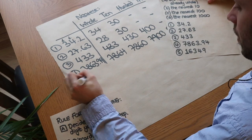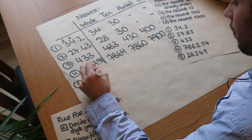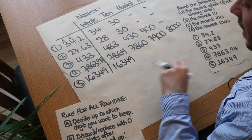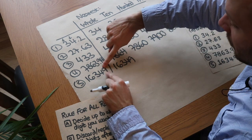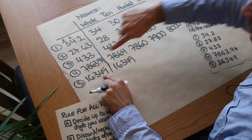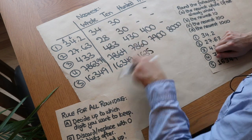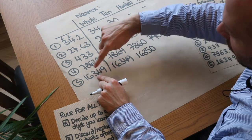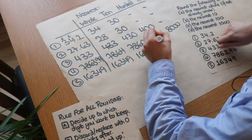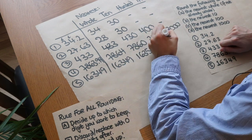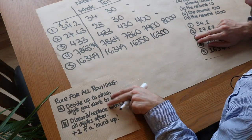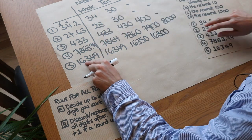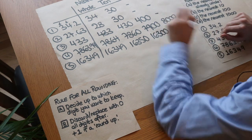Final example - try this yourself: 16,349. To the nearest whole, it's already whole: 16,349. To the nearest ten: keep up to the tens digit - four - check the next digit, nine. That's greater than or equal to five, so four goes up to five, units becomes zero: 16,350. To the nearest hundred: keep up to hundreds digit - three - check the next digit, four. Less than five, so three stays, last two digits become zeros: 16,300. To the nearest thousand: keep up to thousands digit - six - check the next digit, three. Less than five, so six stays: 16,000.